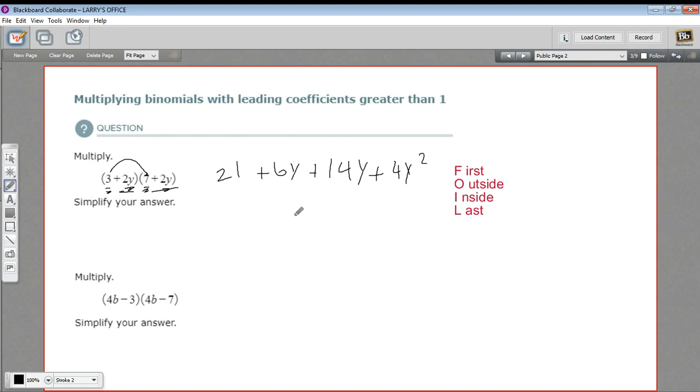All right. So that's the result of all our multiplication. Now we just need to add the like terms. And I have a 6y and a 14y. Add those together, you get 20y.